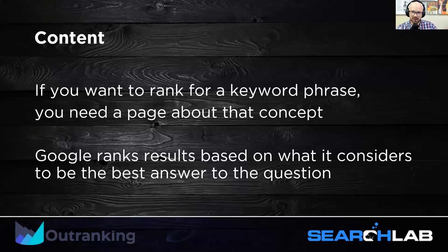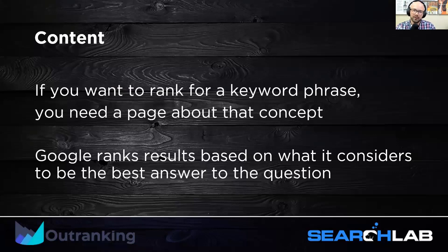You want one strong concept supported by one strong primary keyword phrase with many supporting keyword phrases. You should also have one strong concept per page, not four or five competing disparate concepts. For example, on a Personal Injury Lawyer Chicago page, you shouldn't be discussing how to brew cold brew coffee, how to bake peanut butter cookies, or how to brush your teeth. Those concepts are entirely different and irrelevant to the main concept of the page.